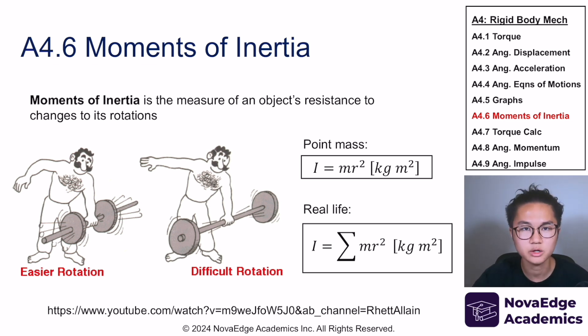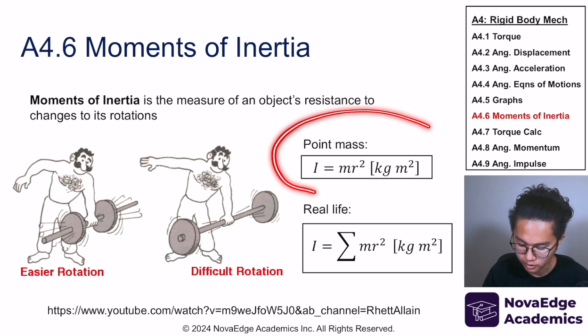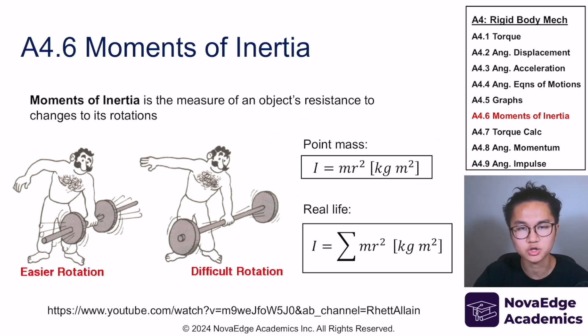So how do we calculate moments of inertia? Well, it is mass times by the radius squared. What do we mean by the radius squared? It's the distance from the center of rotation. Now this is for point mass in an idealized case.